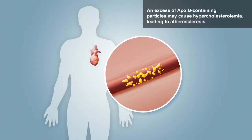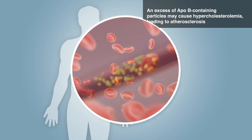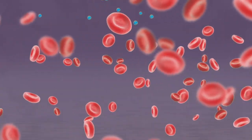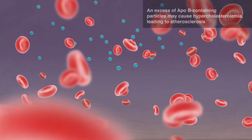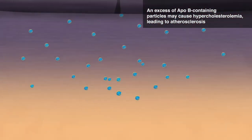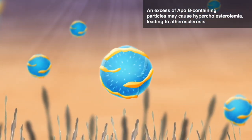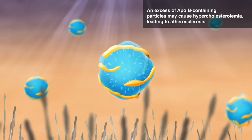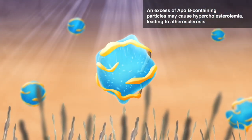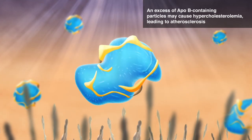Overproduction or under-clearance of these ApoB-containing particles may cause hypercholesterolemia, increasing their deposition of cholesterol into the endothelium, potentially leading to atherosclerosis and cardiovascular disease.